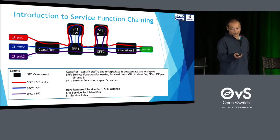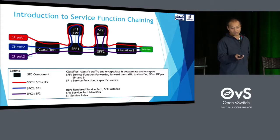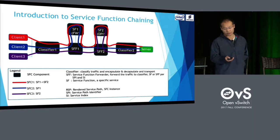Here you can see three traffic flows. The first flow goes through service function 1 and service function 2. The blue one goes through service function 1 only. The black one goes through service function 2 only.